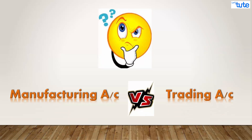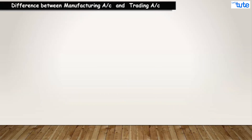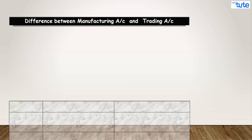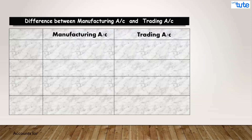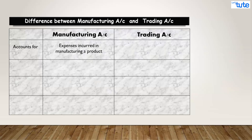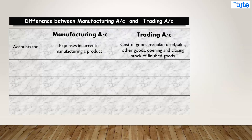Some students get confused between manufacturing account and trading account, so let's clear this doubt. There are four major differences. The first difference is the items included: manufacturing account includes all expenses incurred on manufacturing a product, whereas trading account includes the cost of goods manufactured, sales, other goods accounts, and opening and closing stocks. The second and most important difference is the result: manufacturing account gives the cost of product manufactured, but trading account gives the verdict of profit or loss.